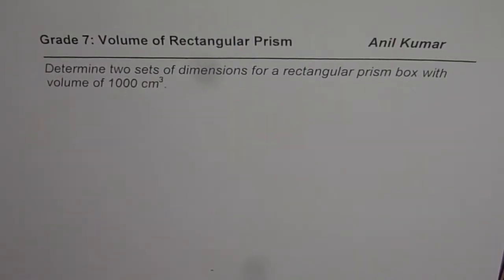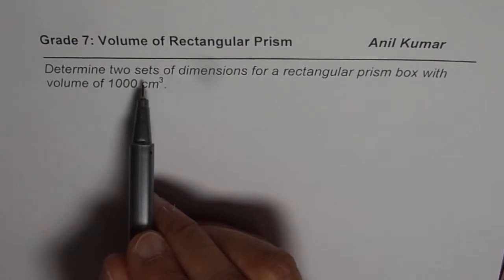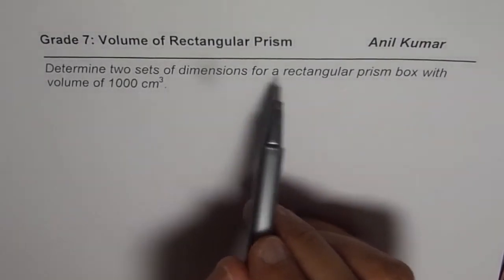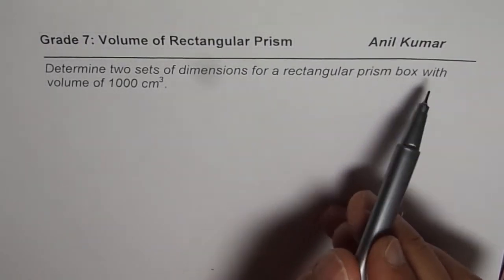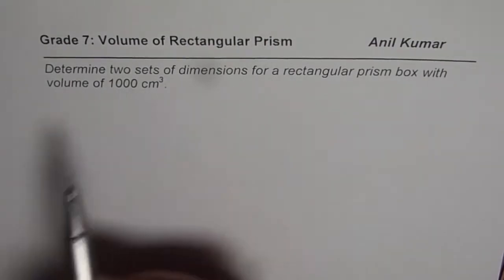I am Anil Kumar. This video is for my grade 7 students and we are discussing volume of rectangular prism. The question is, determine two sets of dimensions for a rectangular prism box with volume of 1000 cm³.